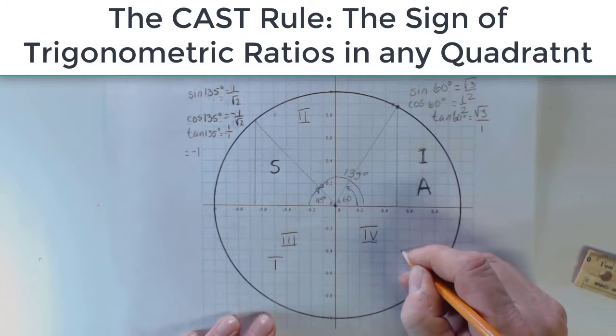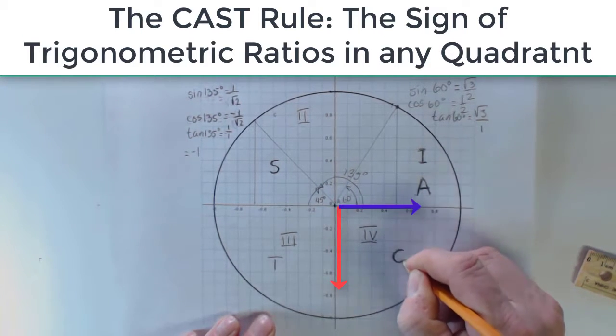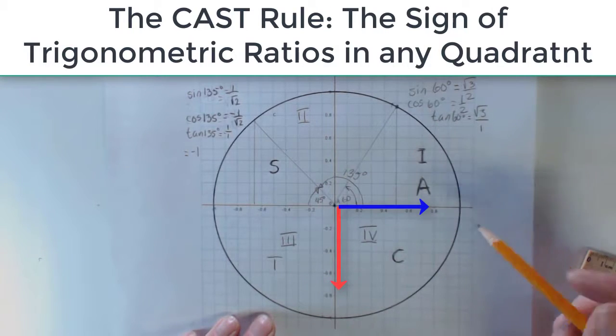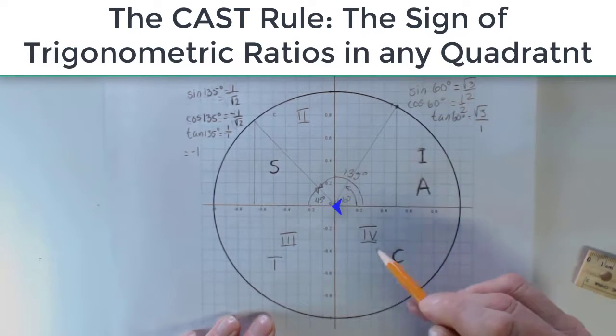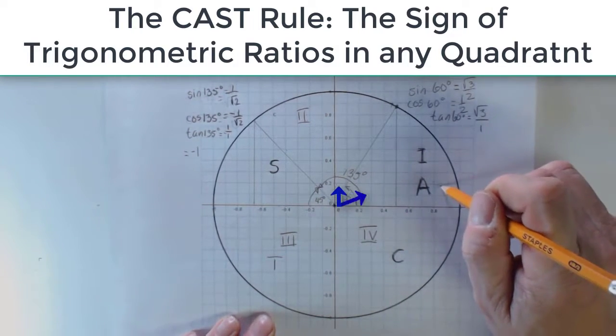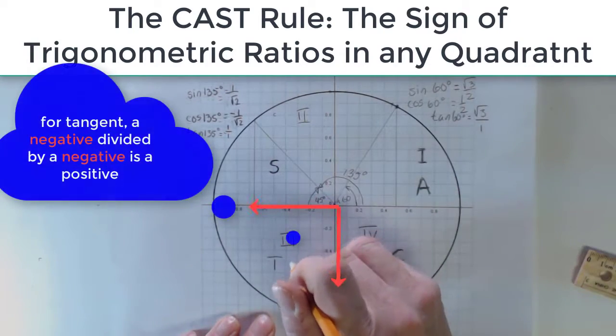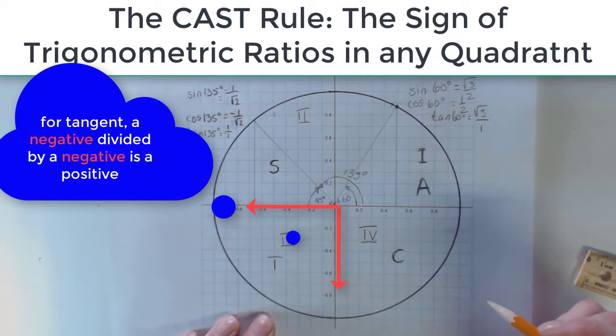Similarly, down here, only cosine is positive. So this is called the CAST rule, C-A-S-T. Cosine is positive in quadrant 4. All of them are positive in quadrant 1. Sine is positive in quadrant 2. And tangent is positive in quadrant 3.